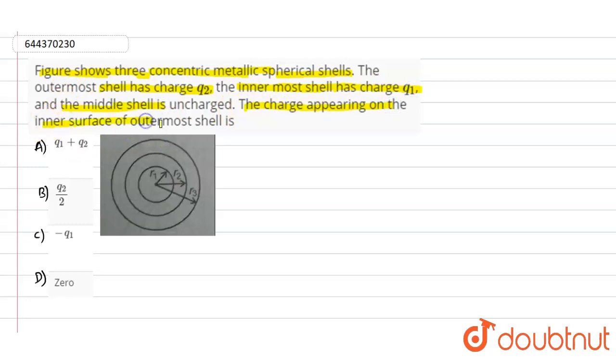The charge appearing on the inner surface of the outermost shell is what we need to find. The charge given to a conductor lies on its surface, so according to that, E_in